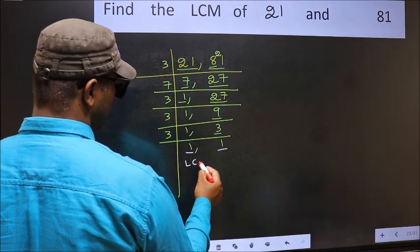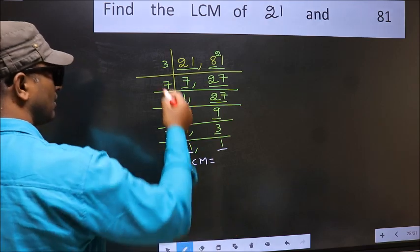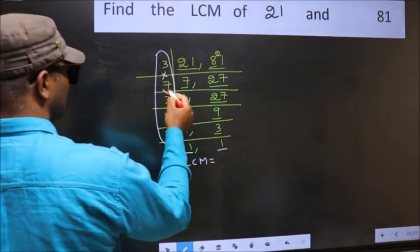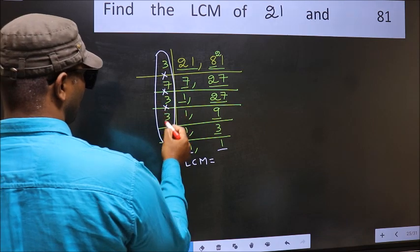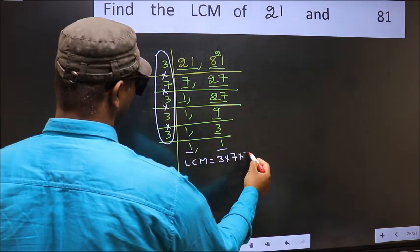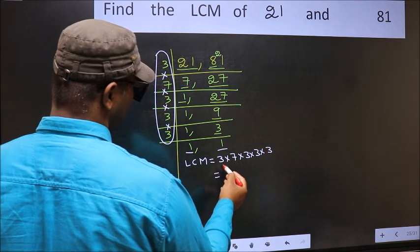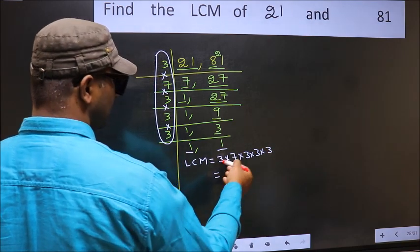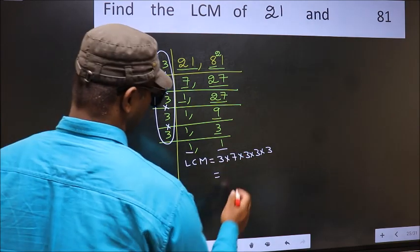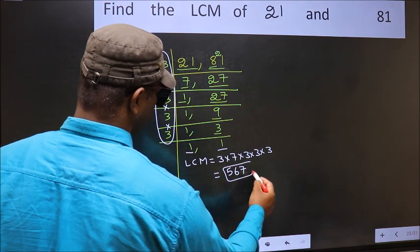So our LCM is the product of these numbers: 3 times 7 times 3 times 3 times 3 times 3. When we multiply these numbers, we get 567. So 567 is our LCM.